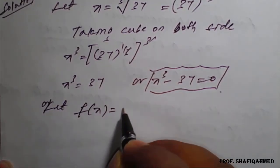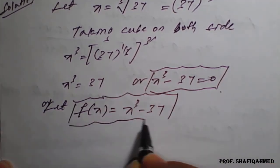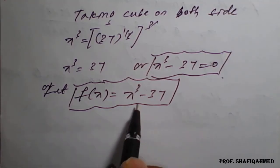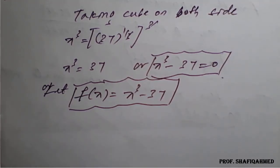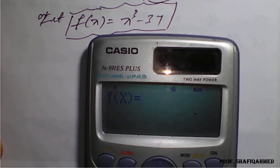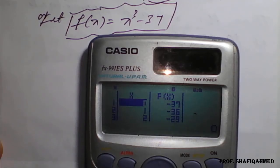Which can be written as x cubed minus 37 equals 0. So we let f(x) equals x cubed minus 37. To apply Newton-Raphson method we need an initial value x₀. We prepare the equation in the calculator — type alpha x cubed minus 37, with starting value 0, end value 5, step size 1. We can see for x equals 3 it gives minus 10, and for x equals 4 it gives 27.